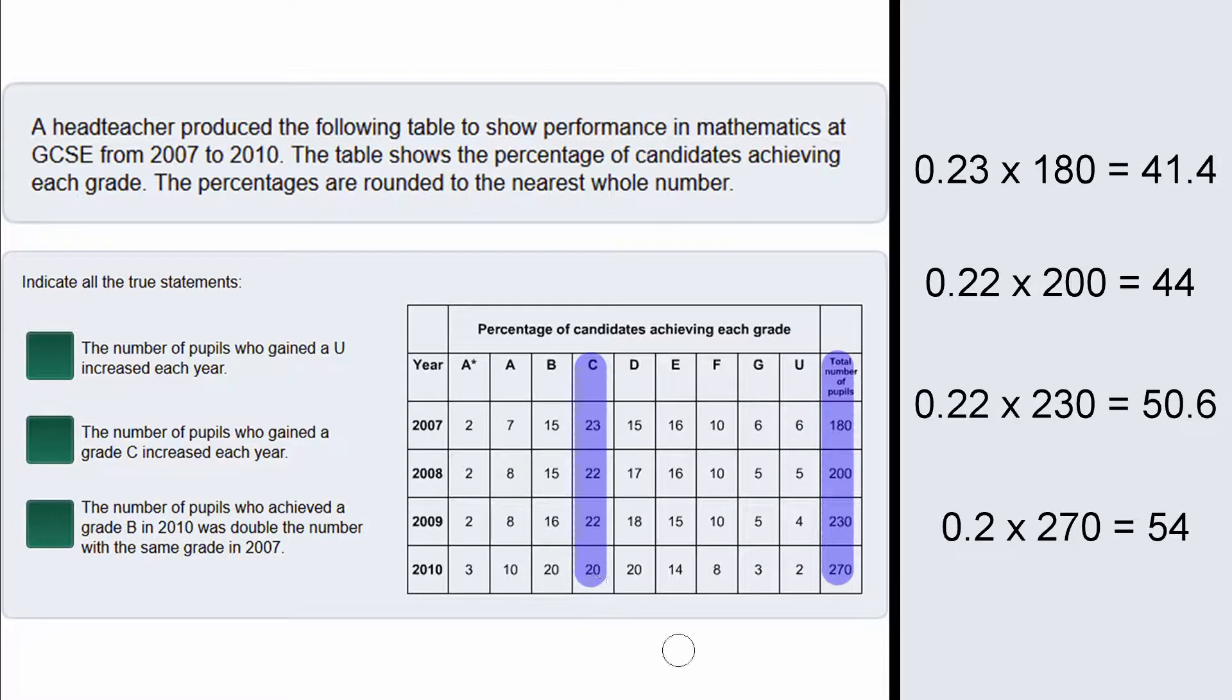Finally in 2010 we are going to do 0.2 multiplied by 270 and that gives us 54. We can see that the number of pupils who gained a grade C did in fact increase each year. So this means that this statement here is true.